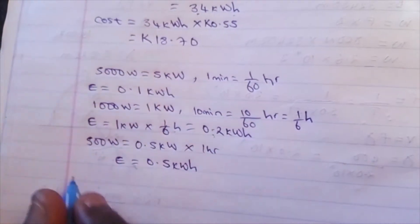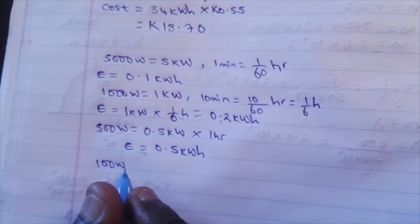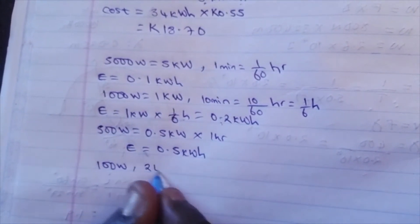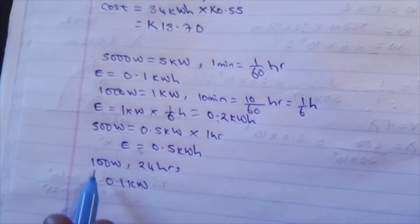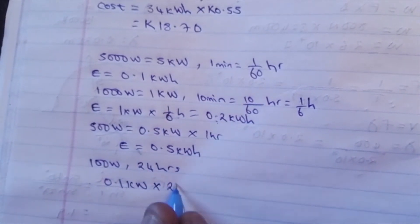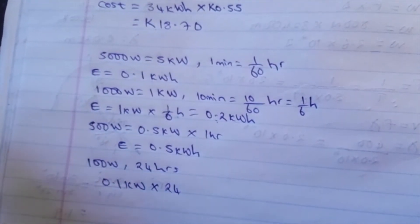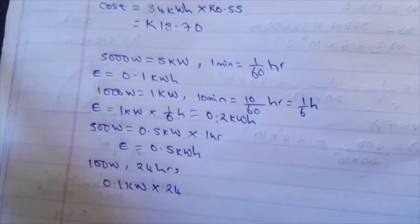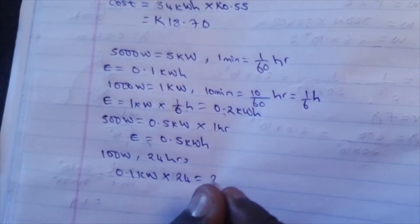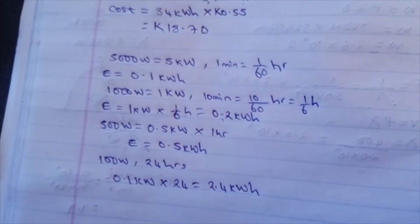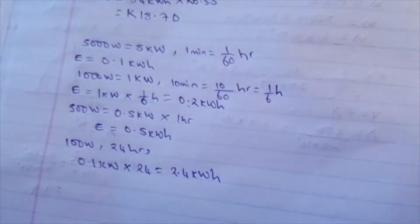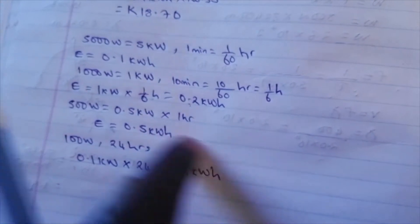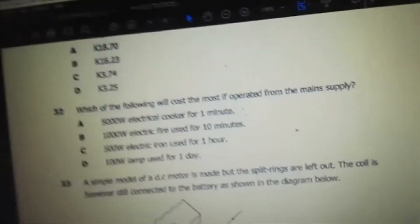For option D, it's 100 watts used for 1 day, which is 24 hours. 100 watts is the same as 0.1 kilowatts, times 24 hours, giving us 2.4 kilowatt hours. The question was which will cost the most — this lamp will cost the most because it has the greatest energy. So the answer is D.